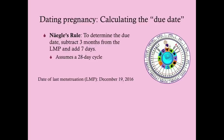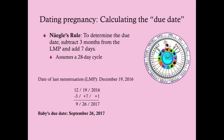Whether to add a year is just common sense: if the LMP was January through March, don't add a year; April through December, add a year. Your due date will not be before your LMP and not 20 months after it. So subtract three months, add seven days, and you get your rough due date — this is assuming a 28-day cycle.